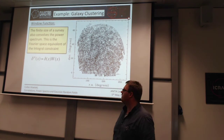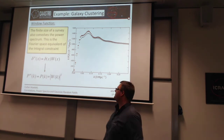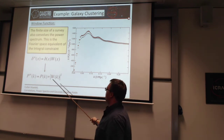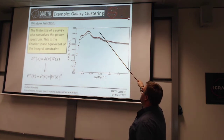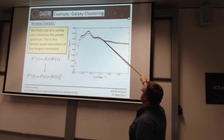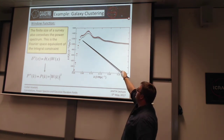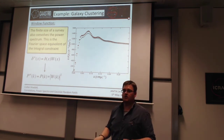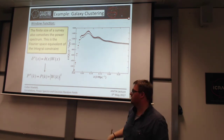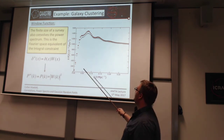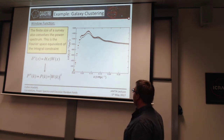But in Fourier space — just as a convolution in Fourier space becomes a multiplication, a multiplication in real space becomes a convolution. This is a problem for the power spectrum: when I measure it, I'm not measuring the true power spectrum on large scales, I measure the power spectrum convolved by this window. This is shown here: the true power spectrum in red, from a simulation, and the white points are the power spectrum measured once you've accounted for the survey mask. This convolution pulls the power down on large scales and moves some power from large scales to small scales.